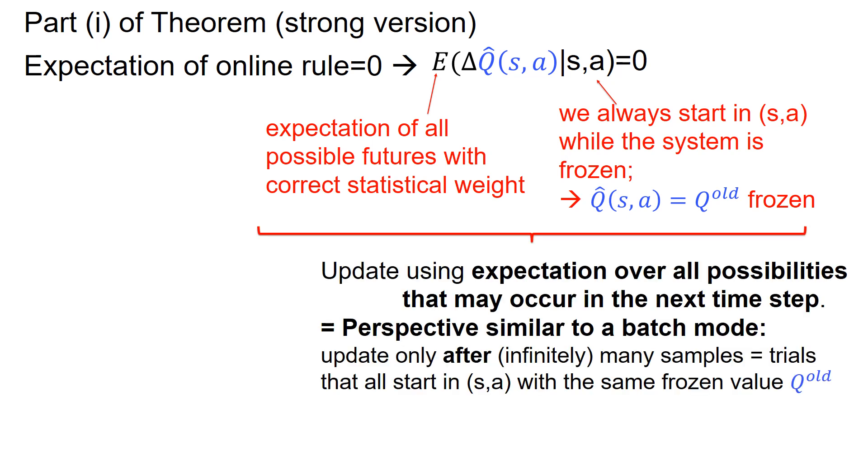And the claim is I update using expectation of all possibilities that may occur in the next time step. And that's this perspective that's very similar to a batch mode. Update only after a very large number of samples. And these samples are the trials that all start in s,a with the same frozen value Q old.